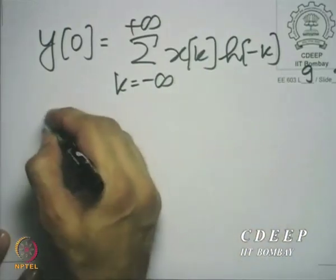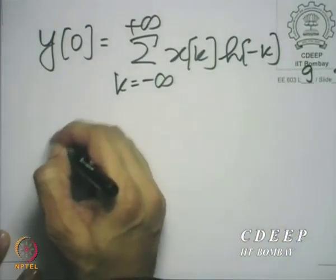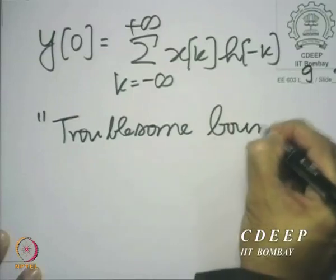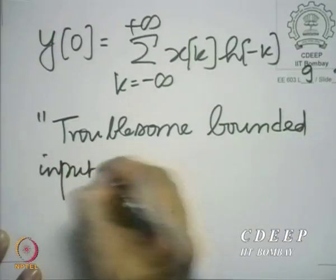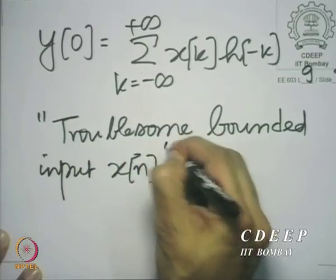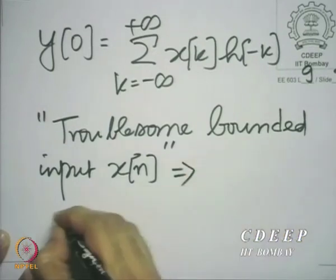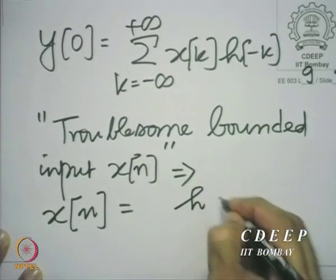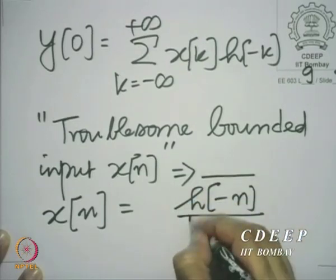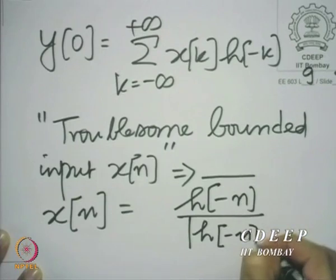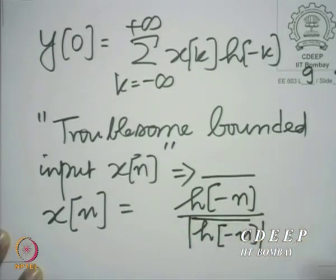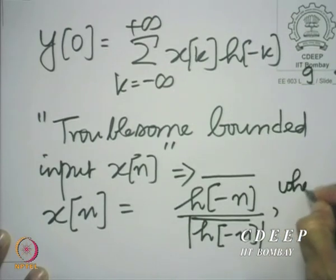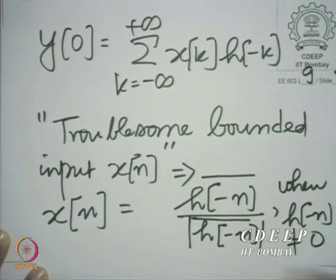Our reasoning was that we can choose a troublesome bounded input x(n). We chose that troublesome bounded input as x(k) equals h conjugate of minus n divided by the modulus of h conjugate of minus n, whenever h(minus n) is not zero, and zero otherwise.